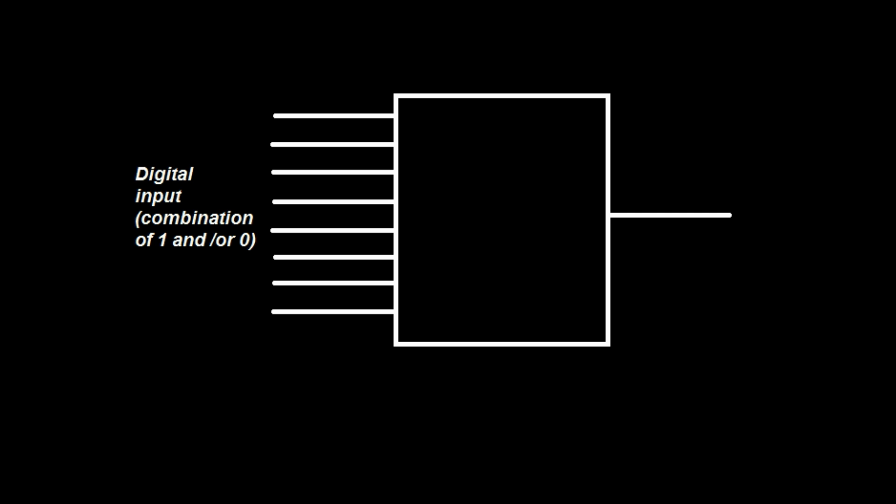A digital to analog converter is a device used for converting digital data into analog form. The input to the DAC is digital input, which may be from a CD, memory card, or any other digital data — a combination of 1s and 0s. The output is an analog signal, like audio, video, or motion. The output of the DAC is not a smooth wave, so it is smoothed by a low-pass filter.